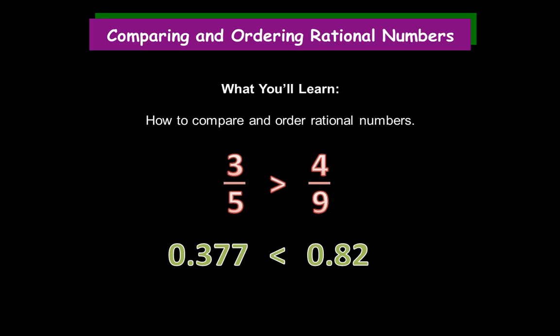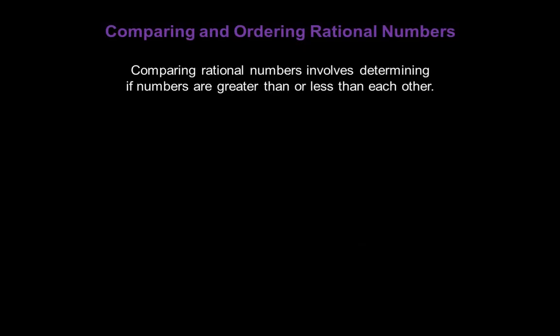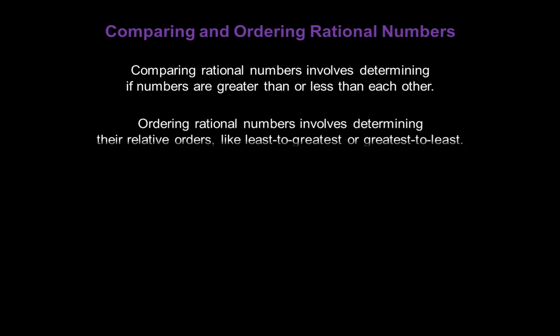Hello and welcome to a video presentation on comparing and ordering rational numbers. Here's what you'll learn: how to compare and order rational numbers. Comparing rational numbers involves determining if numbers are greater than or less than each other. Ordering rational numbers involves determining their relative orders, like least to greatest or greatest to least.